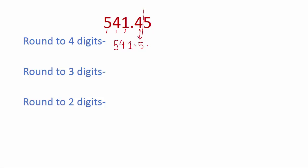For three digits, we round up to the one. The next digit is four, so this one stays as it is. We write one, four, and then five — so 1.45 is the answer. If we are rounding to two digits, we round up to four — that means we take five and four only.